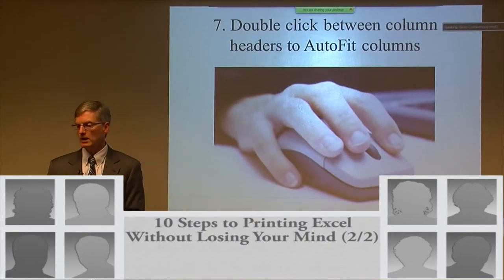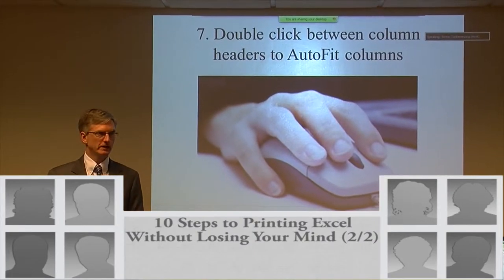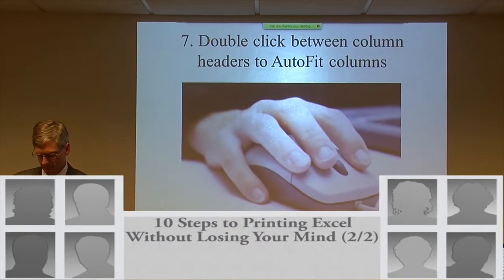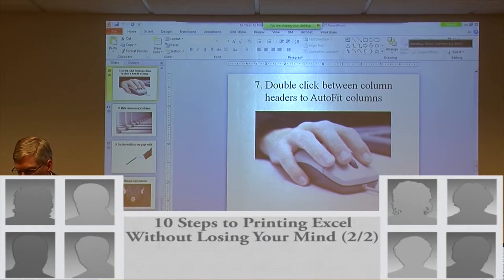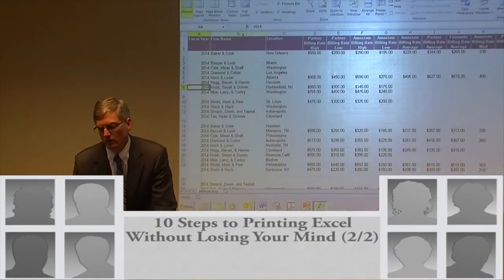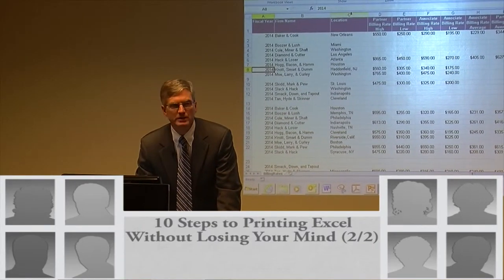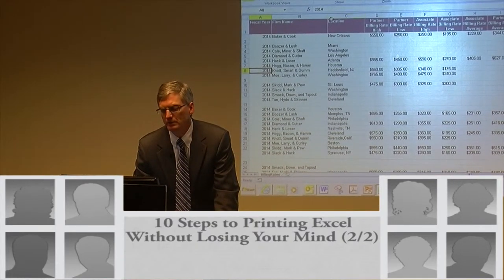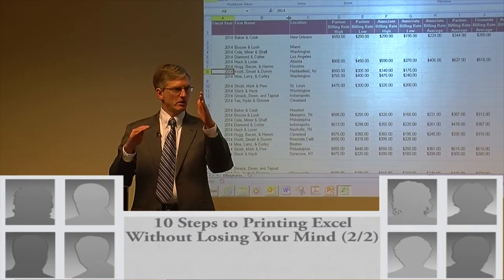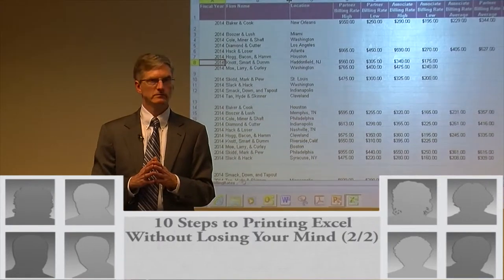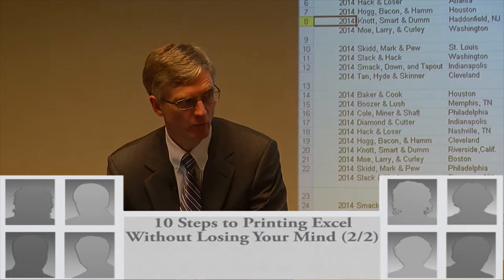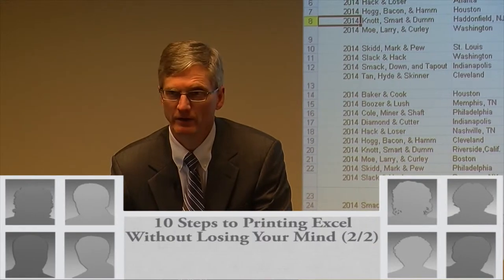Double click between column headers to auto-fit columns. If I go to the corner right between the two columns, you can see the double-headed arrow with the bar in the middle. Then if I double click, it makes the column just wide enough to accommodate the widest entry.